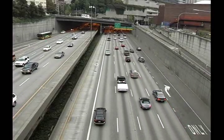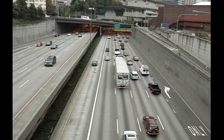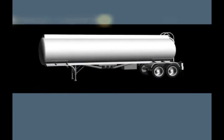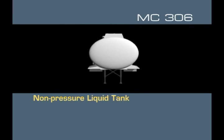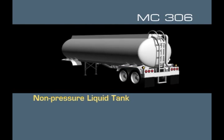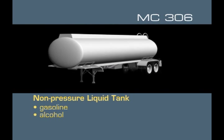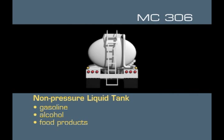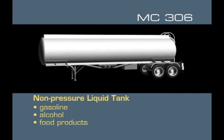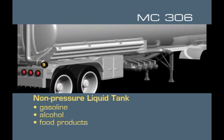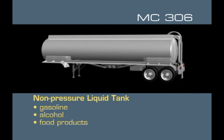The third type of container to recognize are those used in highway transportation. These use the acronym MC for motor carrier, followed by a type number. Common types include the MC-306 non-pressure liquid tank, commonly called the gasoline tanker. These carry all types of liquids, from gasoline to alcohol to food products, and have an oval shape and silhouette. Newer MC-306 tanks are made of aluminum, have bottom valves, and are restricted to 9,000 gallons or 34,059 liters of materials.